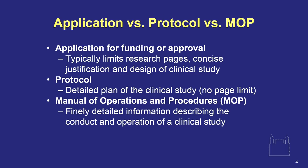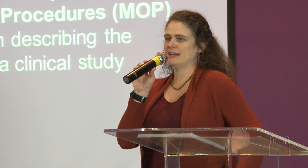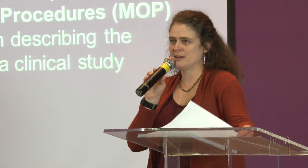What is an application to get funding versus a protocol versus a MOP — sometimes called a MOU — which is a manual of procedures? An application for funding or approval, the type of thing you submit to the Institutional Review Board, typically limits the number of pages you have to describe your research. It is a concise justification and design of a clinical study. However, when you get to the protocol, there is no page limit — this is the document that lets everybody understand how to do your study.